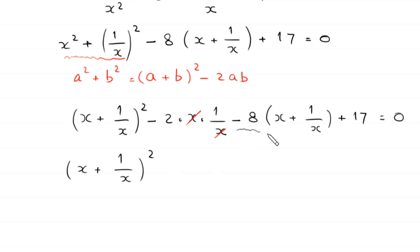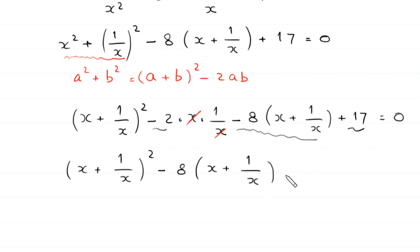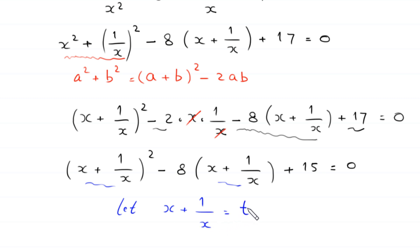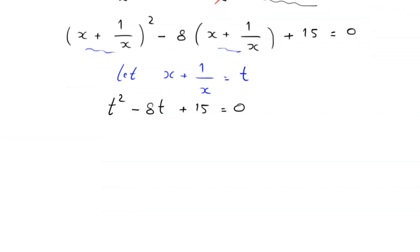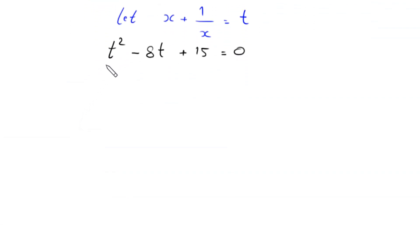We write negative 8 times x plus 1 over x first. After simplifying, the constant term becomes 17 minus 2, which is 15. We suppose that x plus 1 over x is equal to t. So this equation becomes t squared minus 8t plus 15 equal to 0.